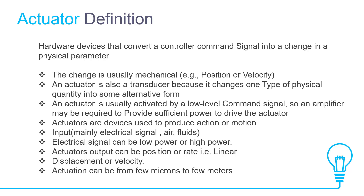The change is usually mechanical — for example, position or velocity. An actuator is also a transducer because it changes one type of physical quantity into some alternative form. An actuator is usually activated by a low-level command signal, so an amplifier may be required to provide sufficient power to drive the actuator.